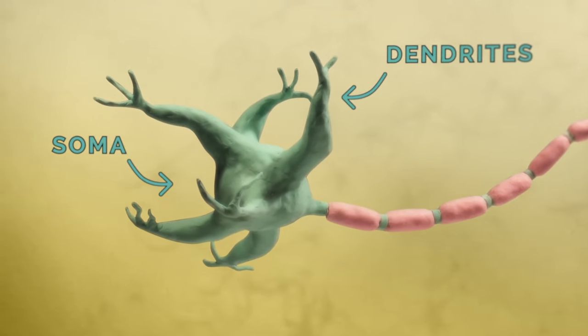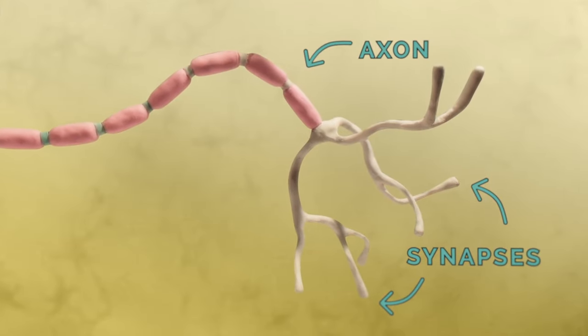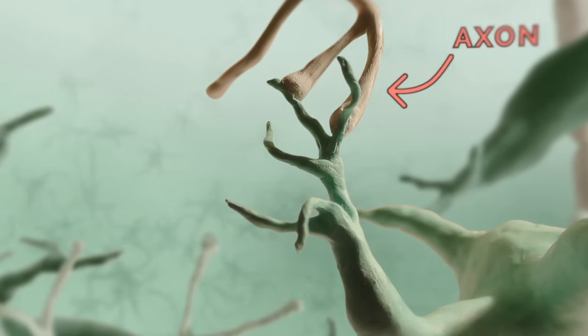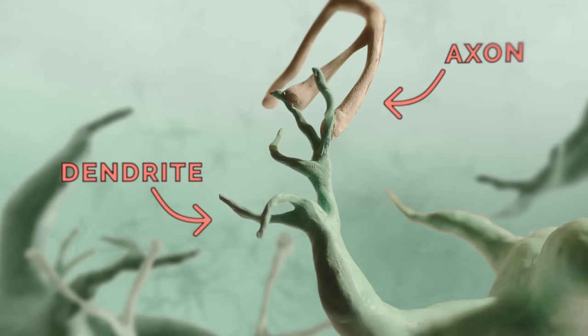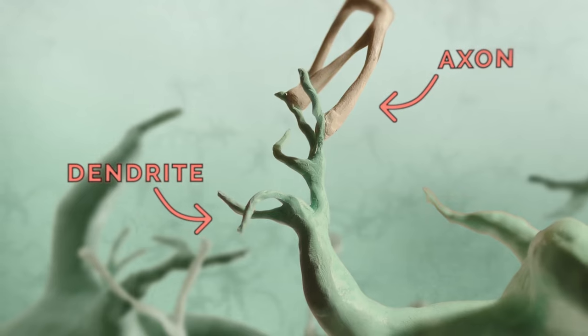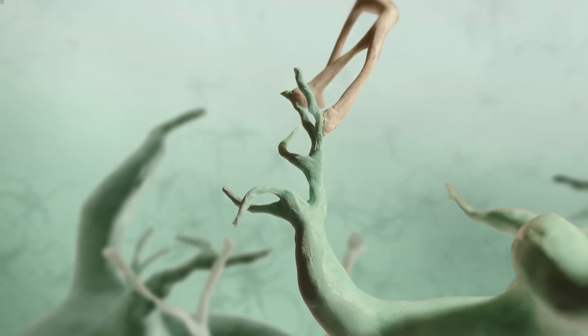That is, they have one portion of the cell for receiving inputs and another portion for sending outputs. The parts of the cells that are specialized for receiving inputs from other cells are called dendrites. The word dendrite comes from the Greek word dendron, meaning tree, and as you can see, the dendrites have a branching, tree-like structure.